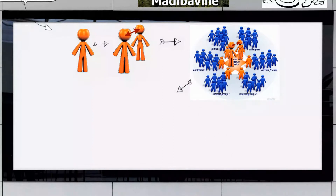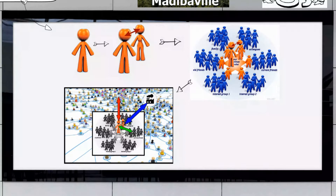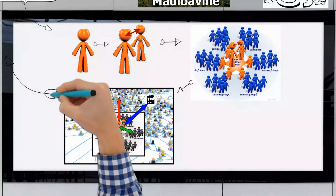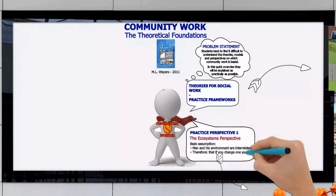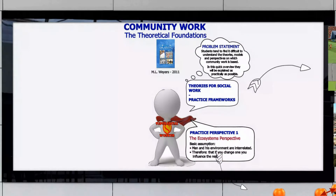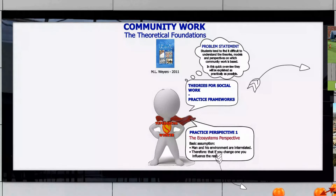But here's the thing — the process also works the other way around. Our individual can also influence everybody and everything in his or her environment. It is the same as throwing a stone in a pond and seeing the ripples that go out from there. The basic assumption of the ecosystem's perspective is that man and his environment are interrelated, and therefore, if you change one system, it will influence the rest. One of the core goals of community work is to use this reciprocal effect in order to improve the community — to change individuals in the community so that they would have a positive influence on others, but also to change the system as a whole so that it would have a positive influence on everybody who lives in it.